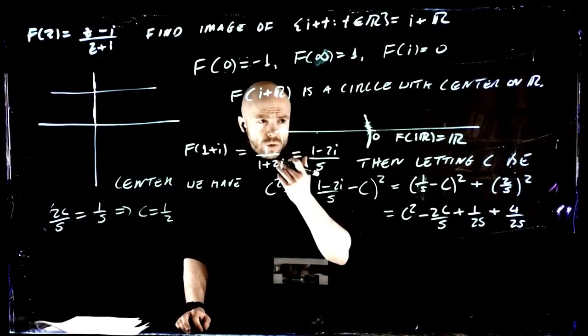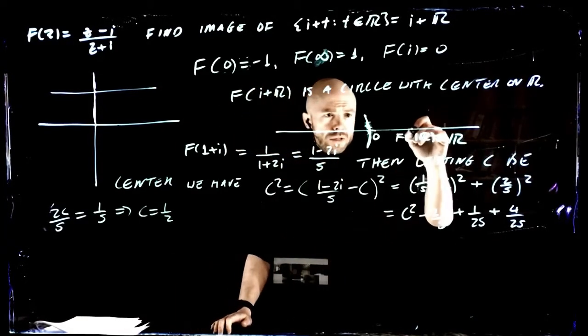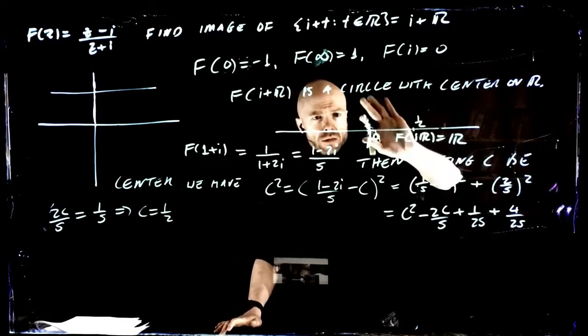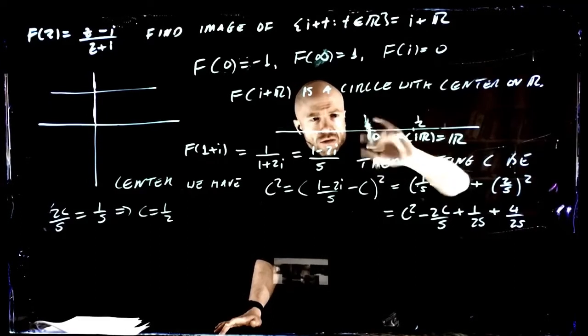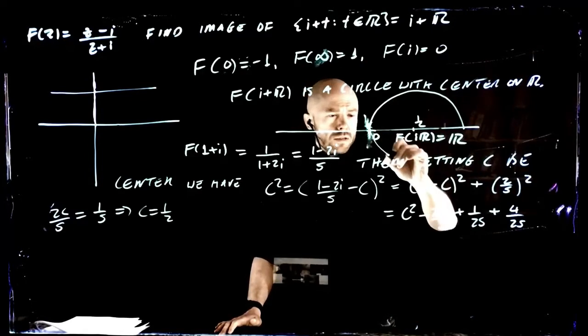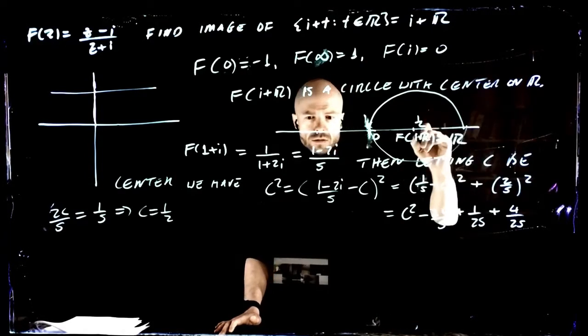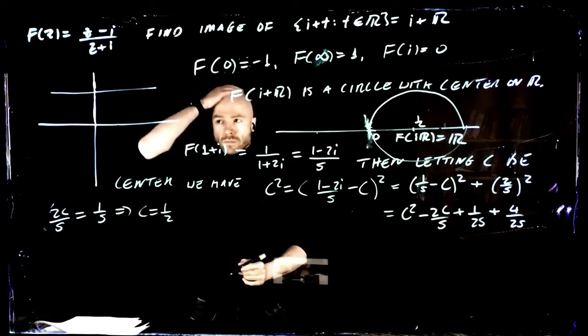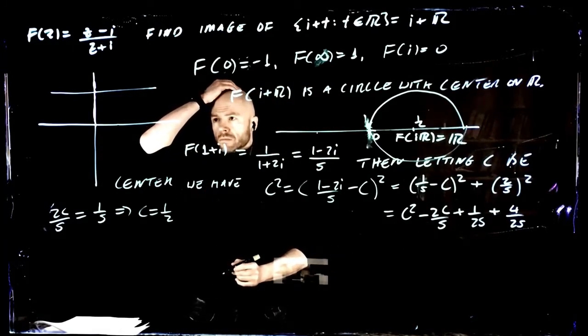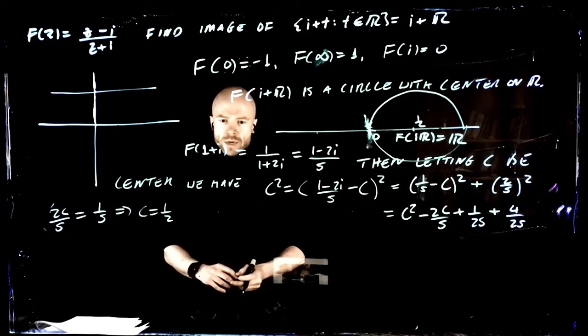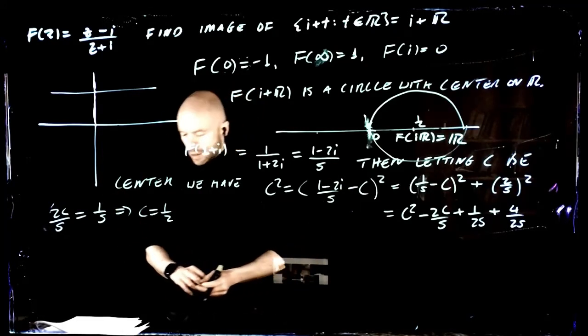So the center of the circle is at 1 over 2, so it's here. And the circle is actually curling the other way, and its radius is also a half. That's the only thing it can be. So that one wasn't too bad. Let's do another one.